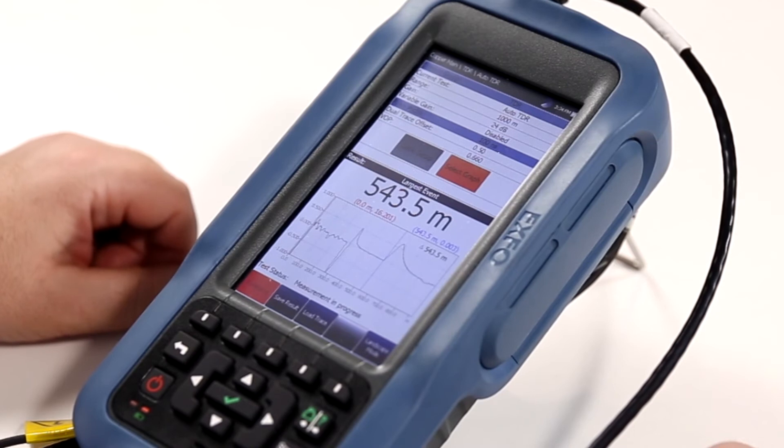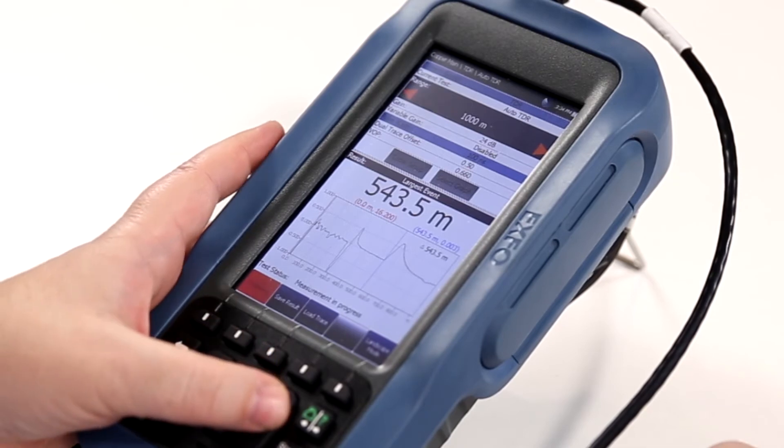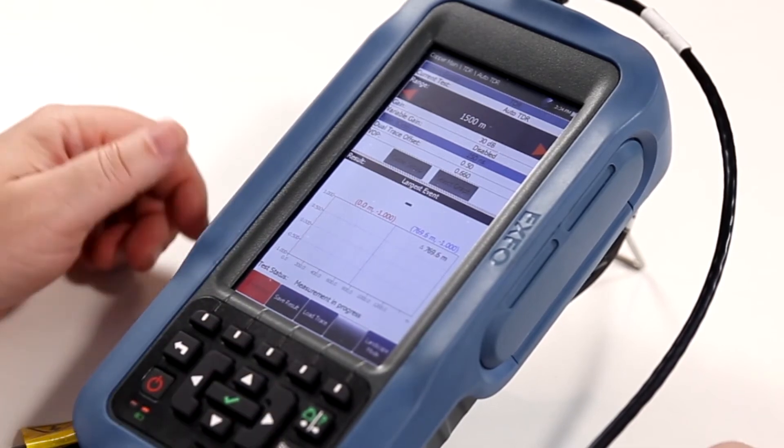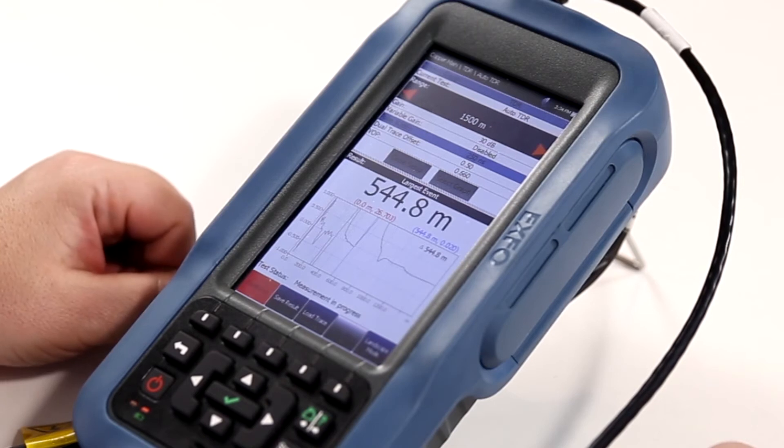If we want to be able to manipulate the data, we can modify the range. In this case, the range is at 1000 meters. So we can increase it to 1500 meters and we will get a slight change to the trace.